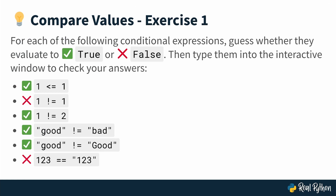Here are our solutions back on the slide. I'm using a green check mark for true and an X for false. One <= 1 is true. 1 != 1 is false. 1 != 2 is true. The string 'good' != 'bad' is true. String 'good' != 'Good' (capitalized) is also true. And the integer 123 == the string '123' is false. Let's move on to the next exercise.